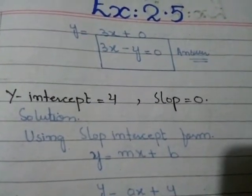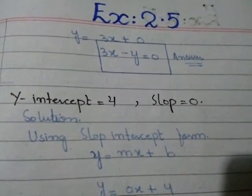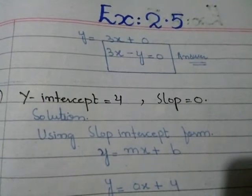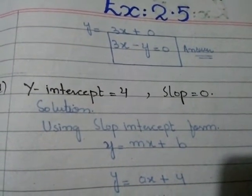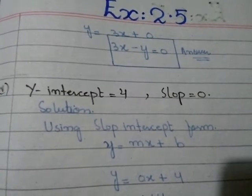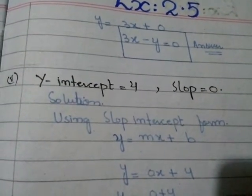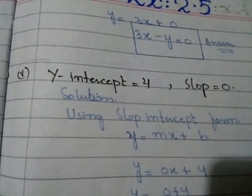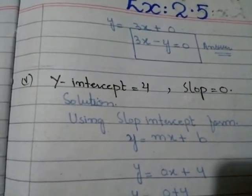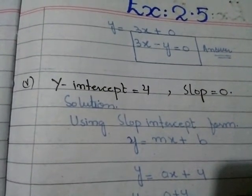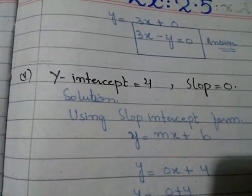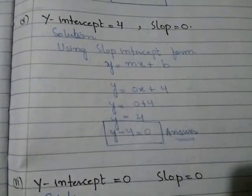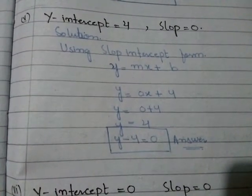y = 3x + 0. Since adding or subtracting 0 has no effect, y = 3x. Rearranging: 3x − y = 0. This is our required equation of a straight line.